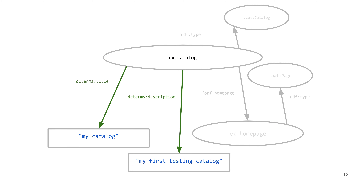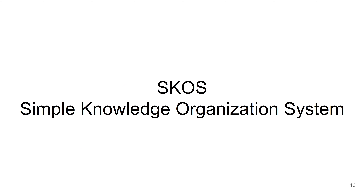We have already seen the usage of Dublin Core in our RDF example where we had a catalog, and we had its name and description connected using Dublin Core title and description properties. The next vocabulary we will talk about today is SKOS — Simple Knowledge Organization System.